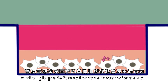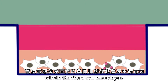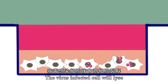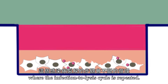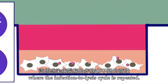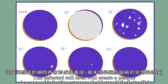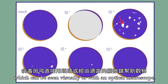A viral plaque is formed when a virus infects a cell within the fixed cell monolayer. The virus-infected cell will lyse and spread the infection to adjacent cells, where the infection-to-lyse cycle is repeated. The infected cell area will create a plaque which can be seen visually or with an optical microscope.